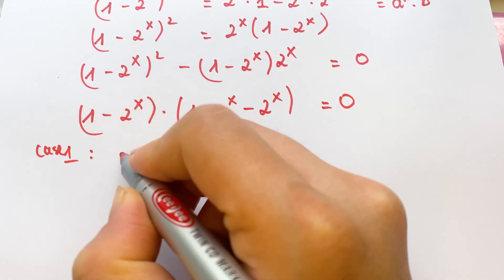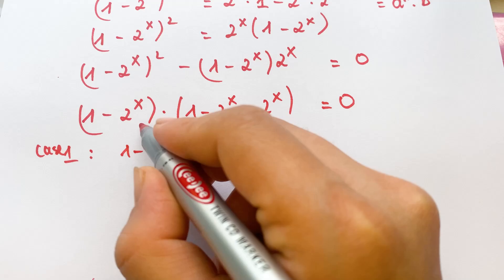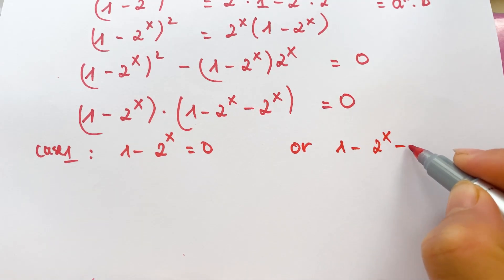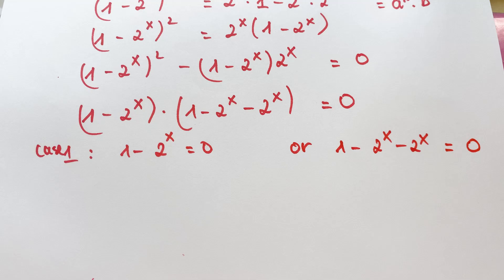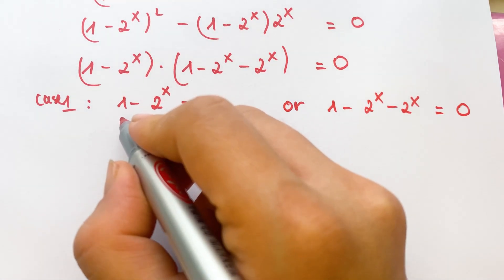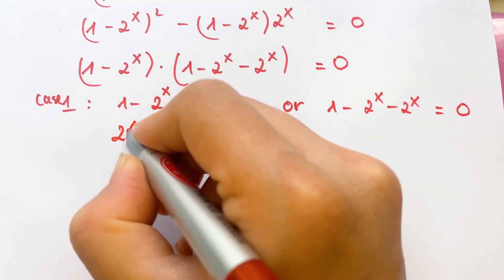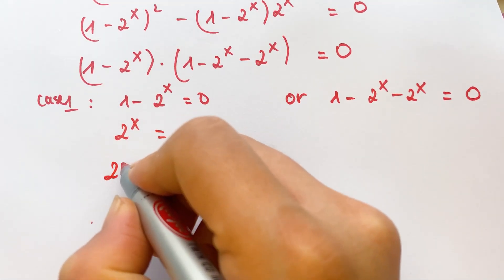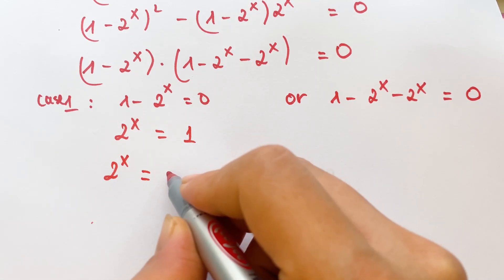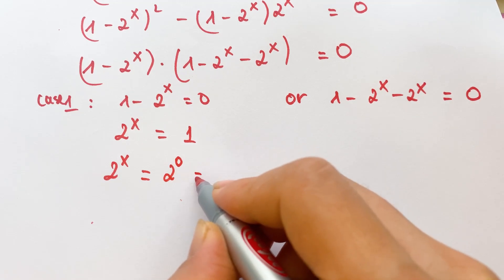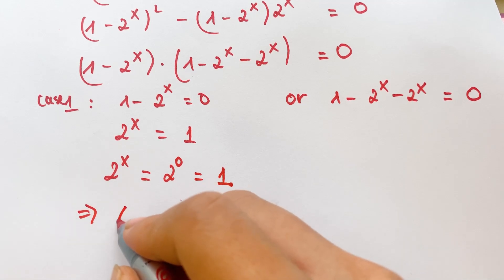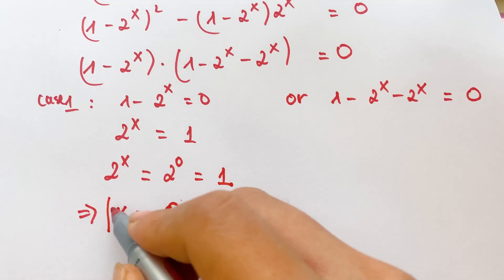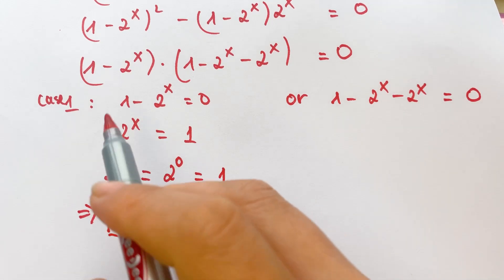So we have 2 cases. Case 1: 1 minus 2 power x minus 2 power x equals 0. Wait — first, the other factor: 1 minus 2 power x equals 0, giving 2 power x equals 1, which means 2 power x equals 2 power 0. Therefore x equals 0. We have x₁ equals 0 from case 1.